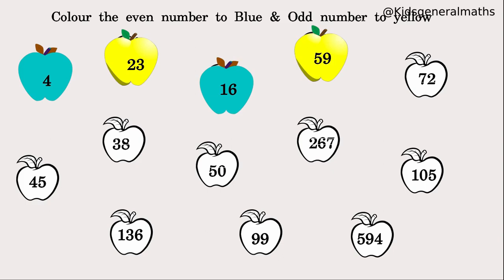Next, 72: the last digit is 2, which is an even number, so 72 is an even number — colour it blue. Next, 105: the last digit is 5, which is an odd number, so 105 is an odd number — colour it yellow.